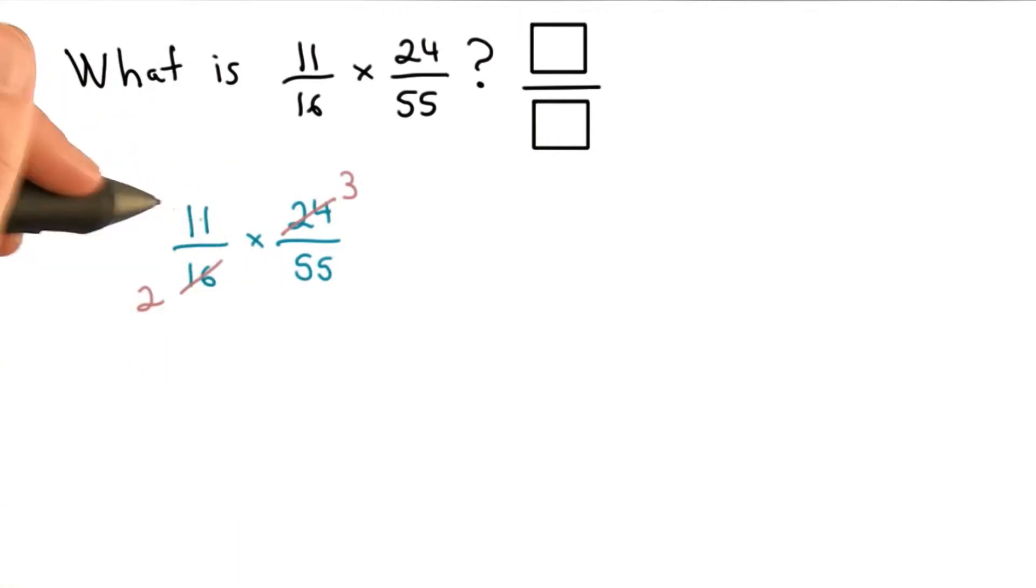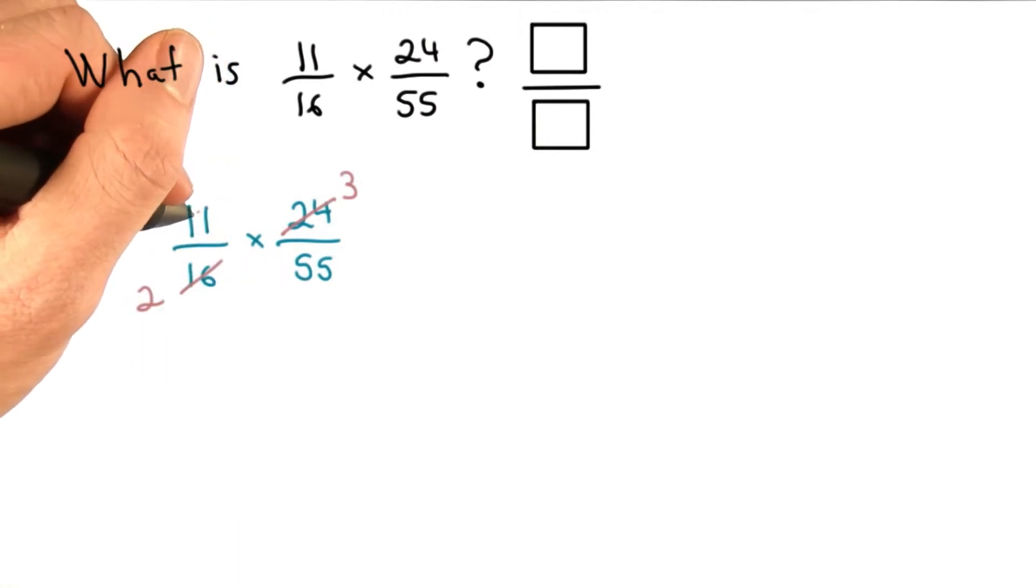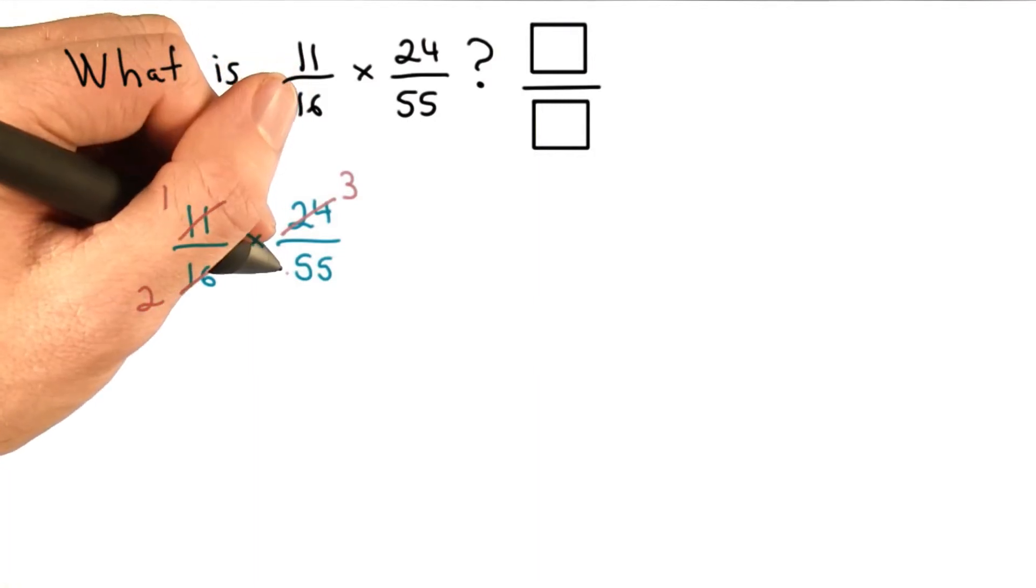With 11 and 55, I know they both share a factor of 11. I'm going to divide that out as well. 11 divided by 11 is 1, and 55 divided by 11 is 5.